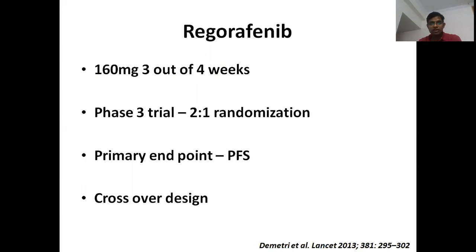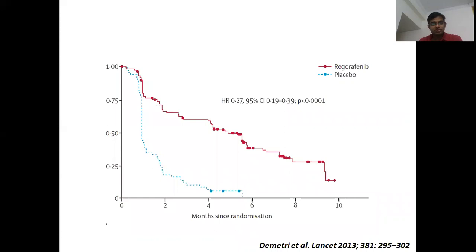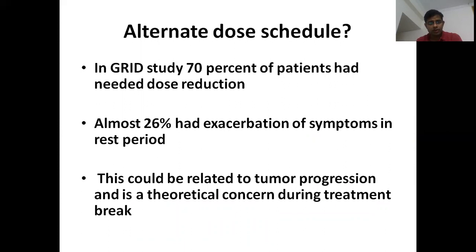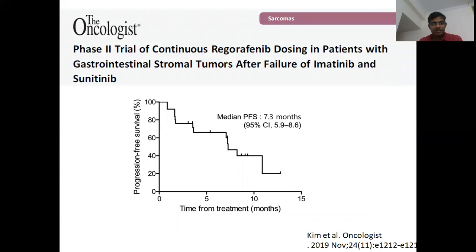The third-line drug is regorafenib, with progression-free survival as the primary endpoint. PFS was 4 months versus 0.9 months — statistically significant. Due to crossover, survival benefit was not demonstrated. In the GRID study, 70% of patients could not tolerate the full 160 mg per day dose, and during the resting period 26% had symptom exacerbation. A low-dose continuous approach was explored in a phase 2 Korean trial using 100 mg once daily, achieving a median PFS of 7.3 months. This is the dose used in clinical practice and it is quite effective.